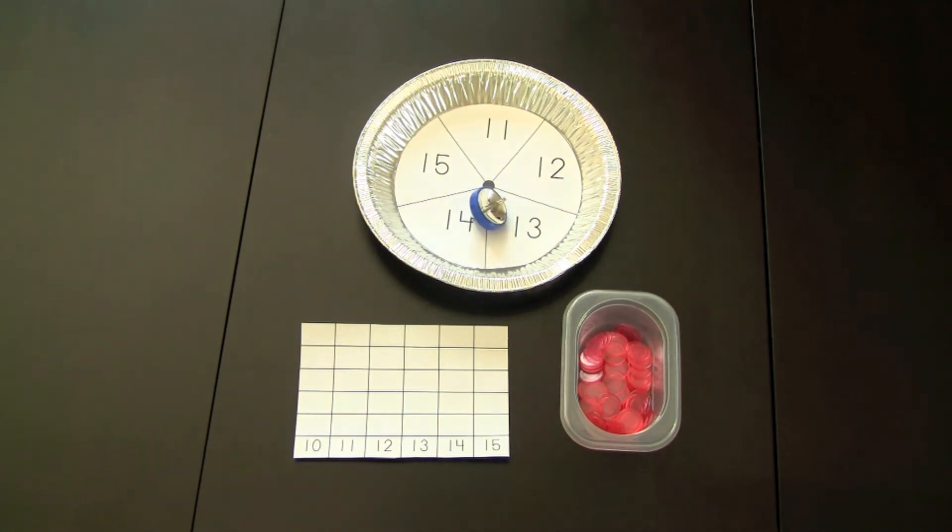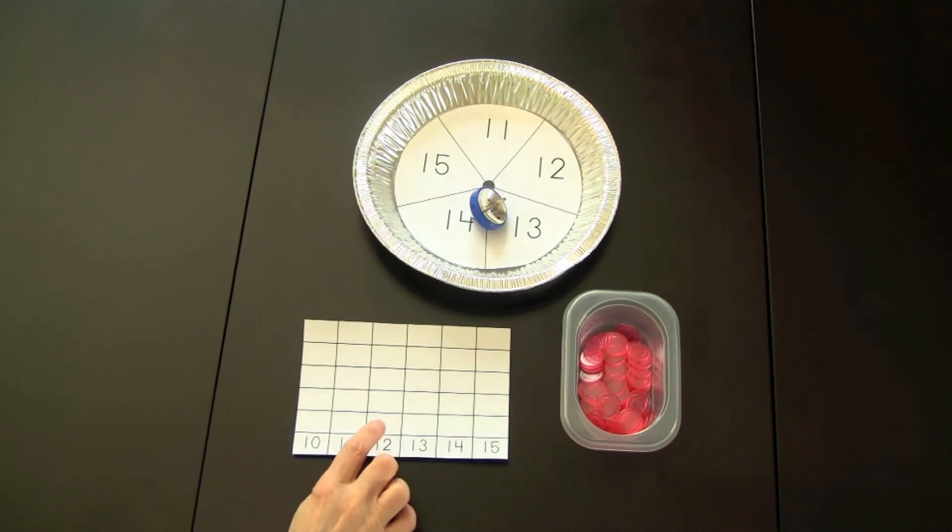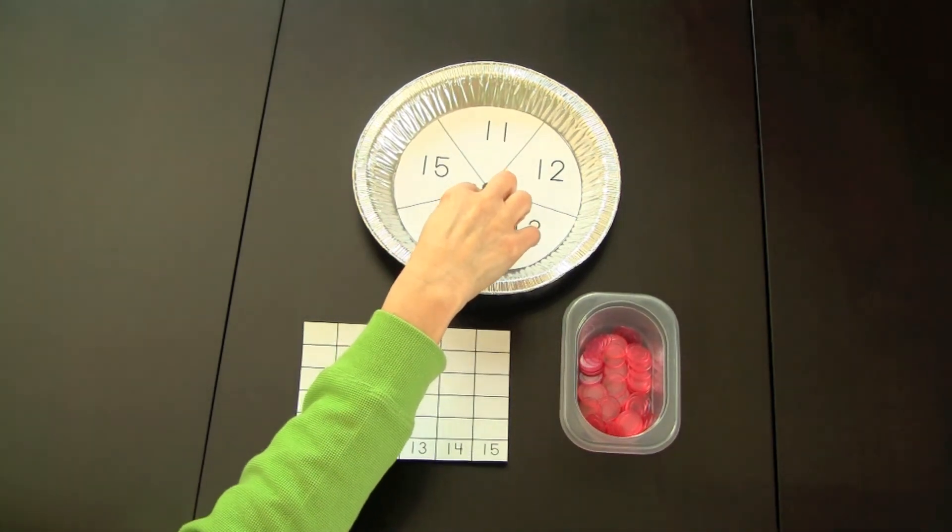This game is called Spin a Number. Each player has a number graph that looks like this. Player 1 would take a turn rolling a spinner.